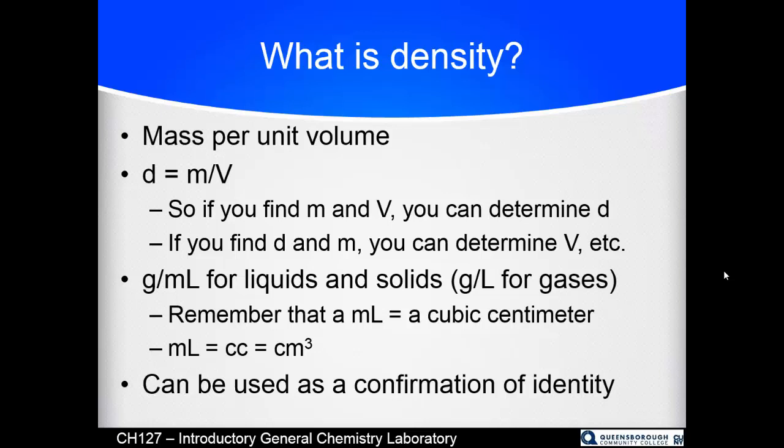Now if you have any two variables in that equation, you can solve for the missing one. If you find the density and the mass, you could determine the volume, or if you find the density and volume, you could determine the mass. For example, if you have a certain capacity truck filled with liquid, if you know the density of the liquid and the volume of the truck, you can determine the mass of the liquid and add it to the empty mass of the truck. Why is that important? You don't want to get a ticket for driving an overweight truck. The units for liquids and solids are grams per milliliter and grams per liter for gases because gases are so light. We divide it by a thousand and make it grams per liter.